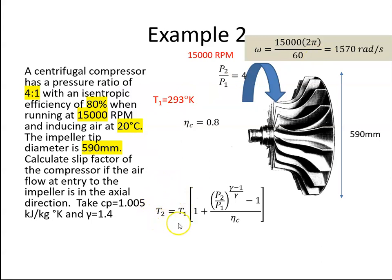We can then use our isentropic formula to calculate the temperature at the exit of the compressor. So we plug in our values: T1 is 293, P2 to P1 is 4, gamma is 1.4, and Eta C is 0.8. When we do that, we get a temperature of 471 degrees Kelvin.